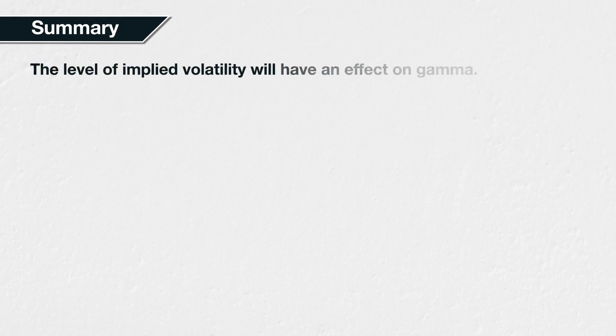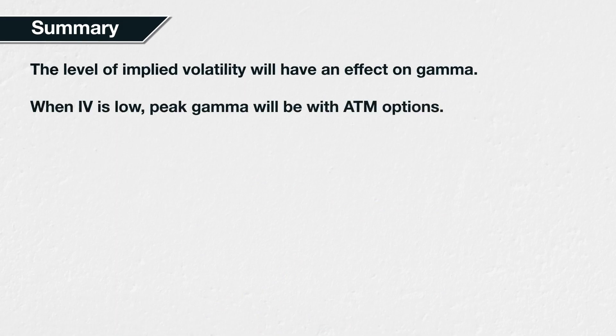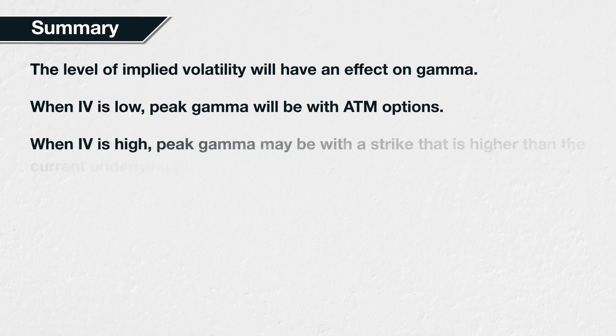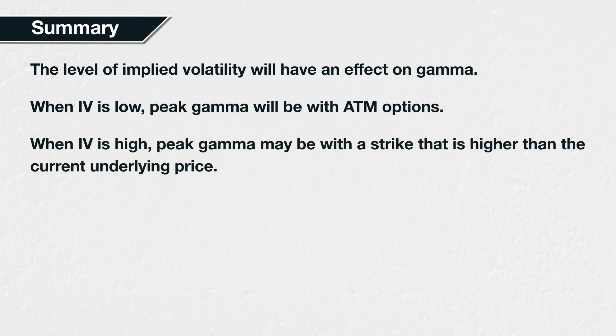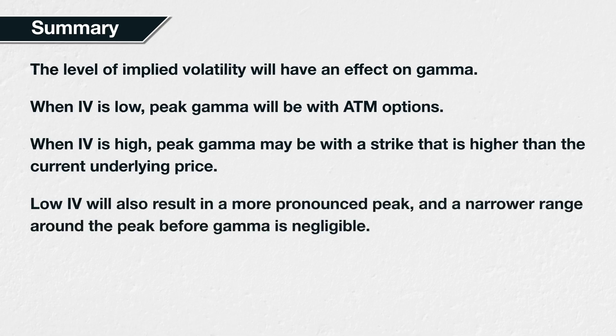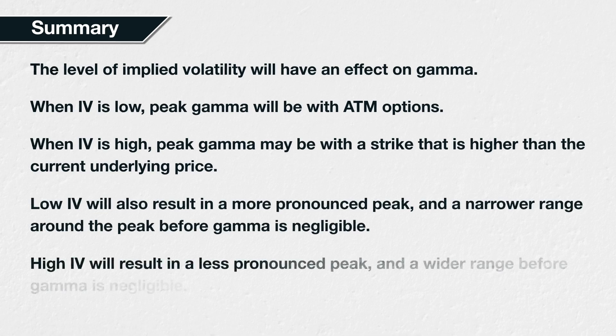In summary, the level of implied volatility will have an effect on gamma for all options. Lower implied volatility will result in the peak of gamma for an option being when the underlying price is closer to the strike price of the option. Higher implied volatility will result in the peak of gamma being when the underlying price is lower than the strike price. From a multi-option perspective, with higher implied volatility, peak gamma will be with options that have a strike price higher than the current underlying price. Lower implied volatility will also result in a higher peak and a narrower range before gamma reduces to negligible amounts. Higher implied volatility will result in a lower peak and a wider range before gamma reduces to negligible amounts.